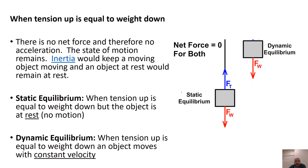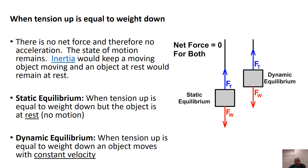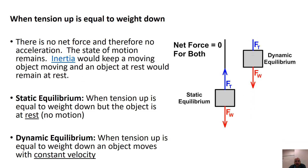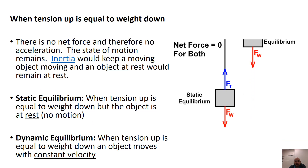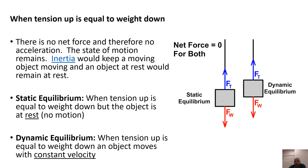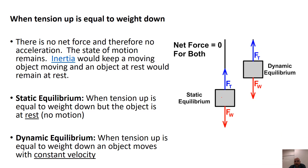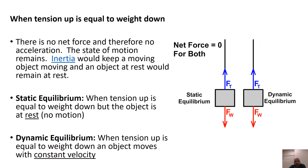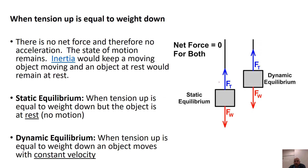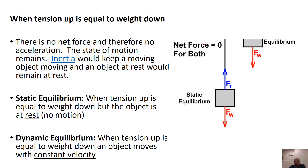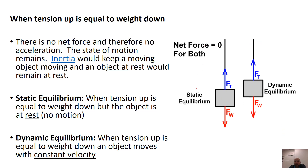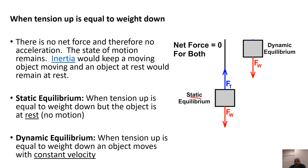When tension up is equal to weight, we have two possible conditions. We could have static equilibrium, which means the object is at rest and staying at rest. This goes with inertia — no net force, no acceleration. We have static equilibrium, meaning resting equilibrium.